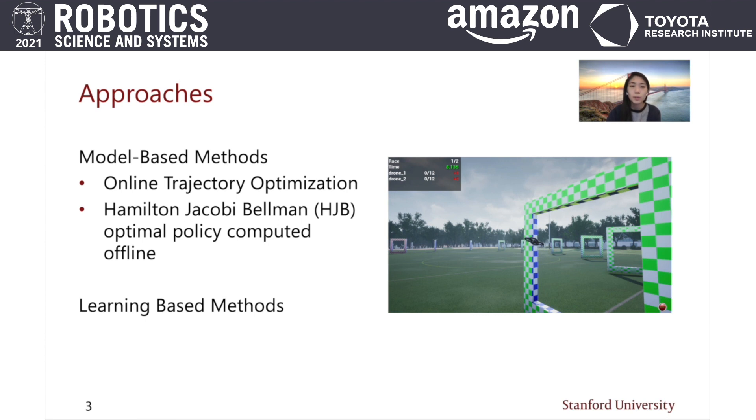As such, these methods are typically not suitable for a quadrotor model with 12 or more states. Lastly, learning-based methods have increased in popularity for robotics applications as deep neural networks can be used to generate policies for high-dimensional systems over a large region of the state space.